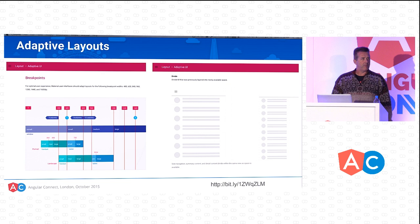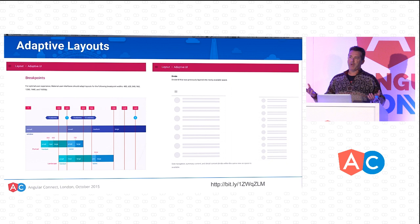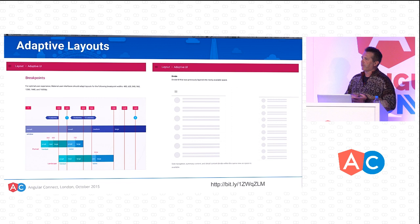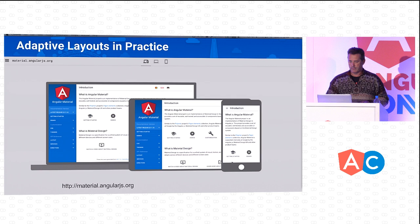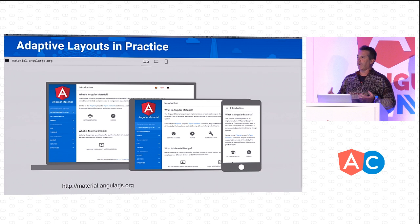Adaptive layouts are part of the Material Design specification. They identify how components should transform themselves across different devices, device sizes, and even different orientations. This transformation means laying them out differently or perhaps even using different components. We've all heard about responsive design, but adaptive layouts extends that even further. You can read all about the adaptive layout specifications at the Material Design site. Google's design team is also developing a tool to help developers test and preview adaptive layouts.